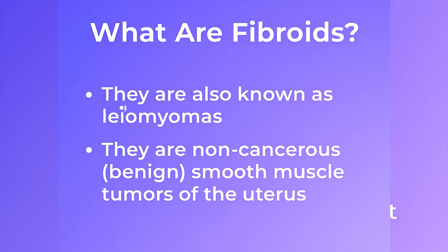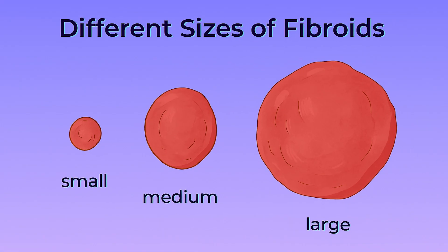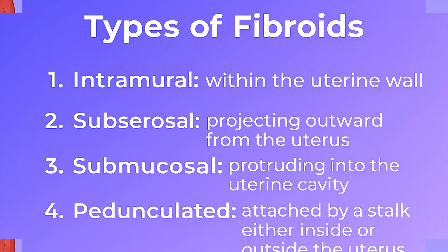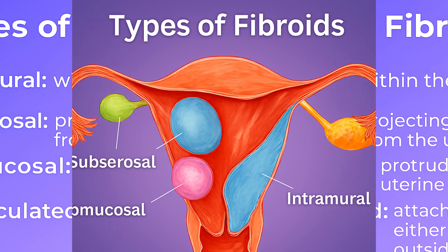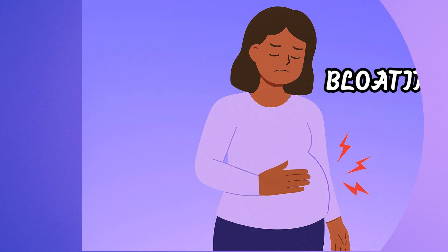Fibroids, also known as leiomyomas, are non-cancerous smooth muscle tumors of the uterus. They vary in size, number, and location, and are classified into four main types: intramural, subserosal, submucosal, and pedunculated.